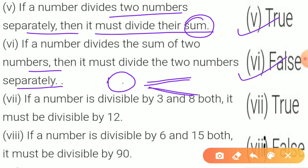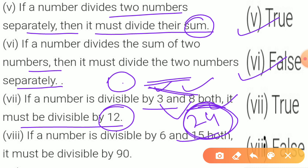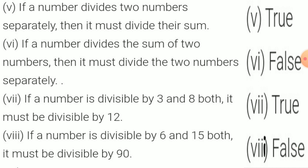Statement 6: if a number is divisible by both 3 and 8, it must be divisible by 12 — True. Because 3×8 = 24, and if a number is divisible by 24, it is also divisible by all factors of 24, and 12 is a factor of 24. Therefore the answer is True.